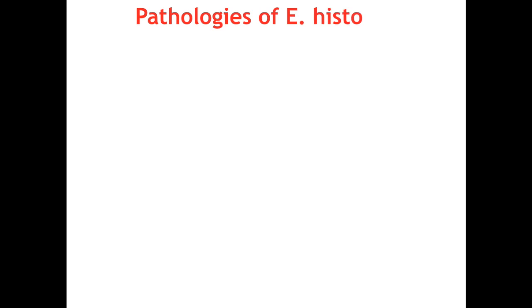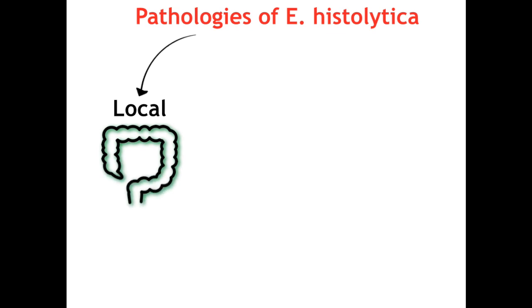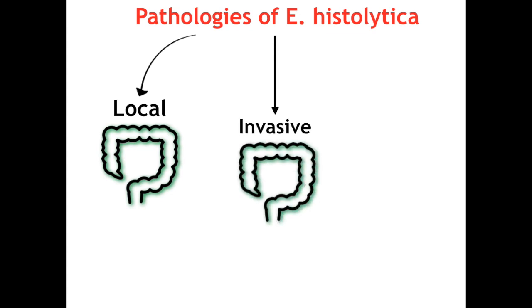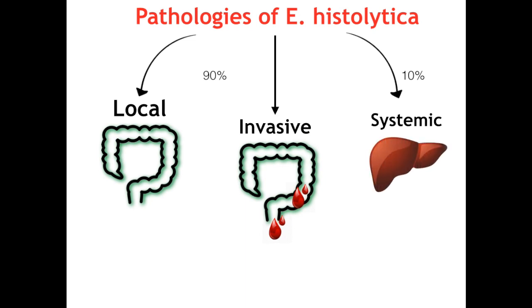There are three overall pathologies we need to know for E. histolytica. The first is local disease, where the trophozoites remain in the colon — replicating, encysting, maturing, and passing cysts through stool. Second is the invasive form, where the trophozoites penetrate the mucous layer of the gut, make contact with the mucosa, bore holes, and phagocytize tissue, causing overt bleeding. In 10% of cases, trophozoites can gain access to the systemic blood supply and disseminate most commonly to the liver, causing an amoebic liver abscess. Regardless of the pathology, mature cysts are passed through stool.